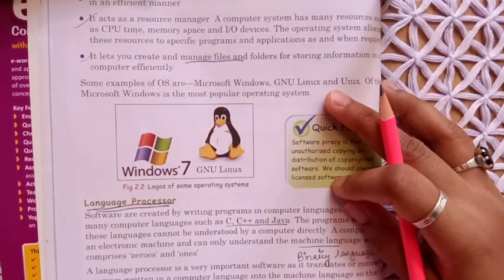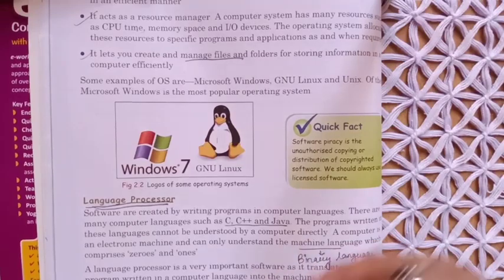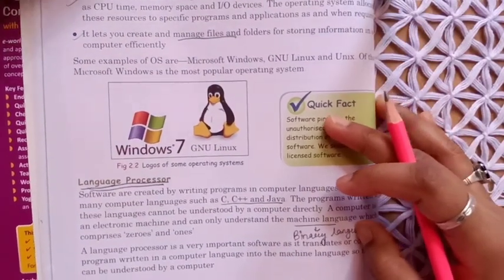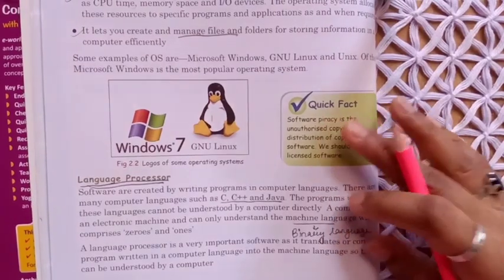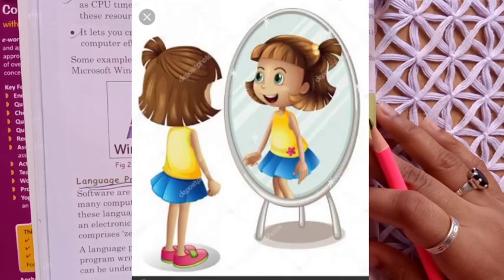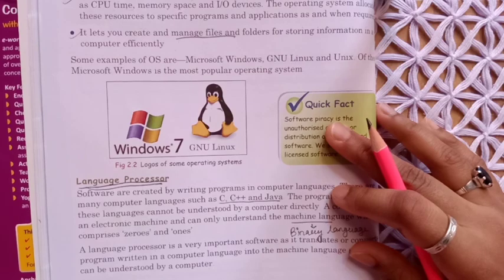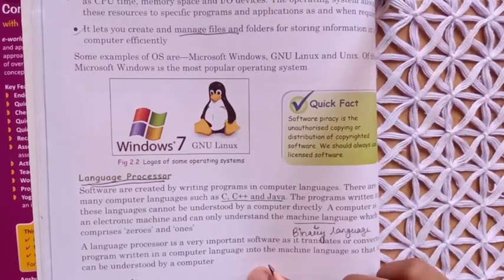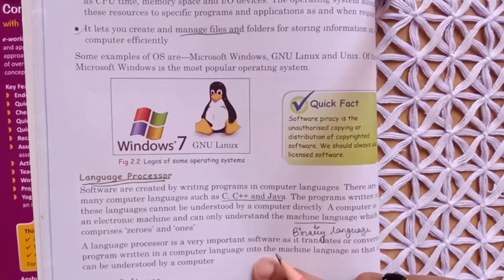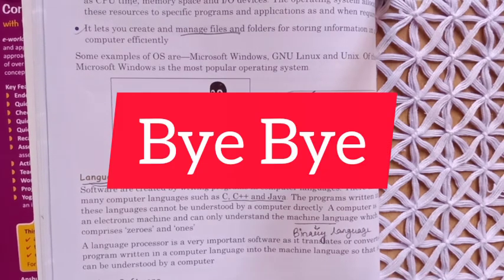We will discuss the remaining topics in the next class. Your homework is to read this chapter very carefully — read it standing in front of a mirror, loudly and clearly, at least two times. There are about two pages to read well. Any questions you don't understand, you can message on WhatsApp. Okay students, take care of yourself and bye bye.